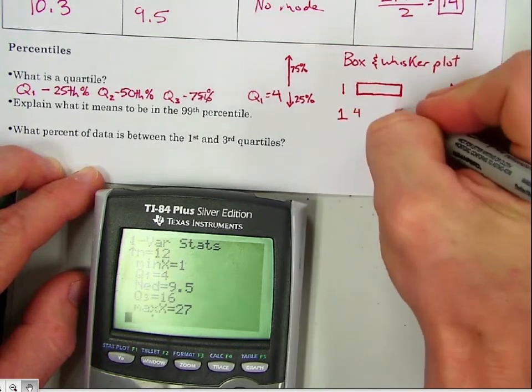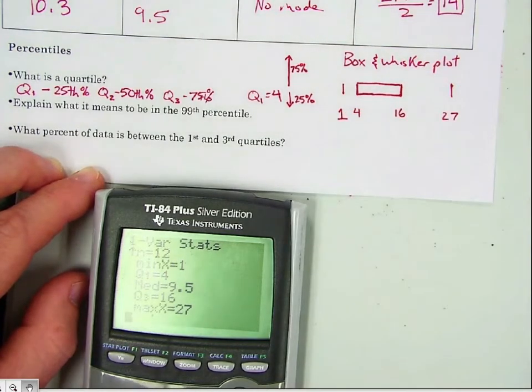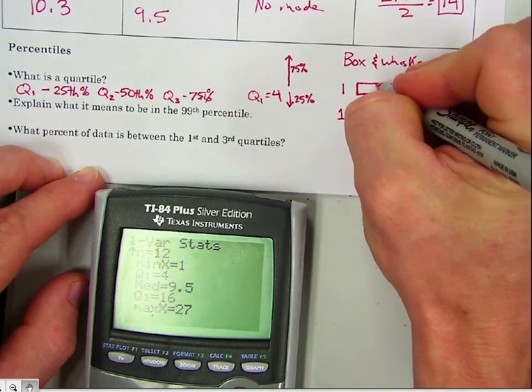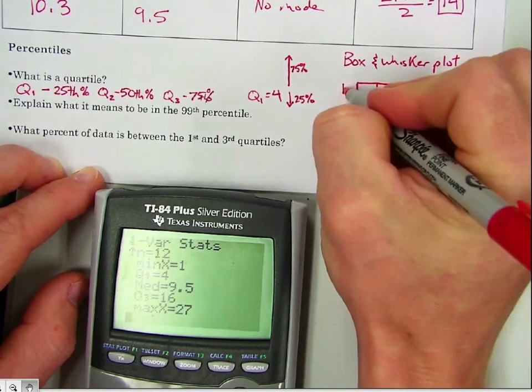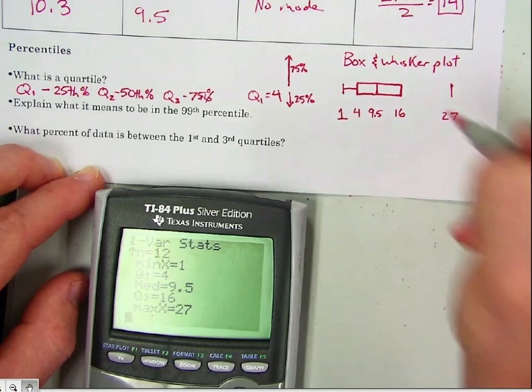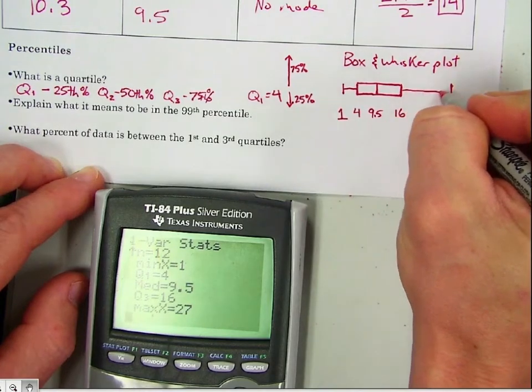So there's the number 4, there's 16. Then it's also going to show a line for our median at 9.5.